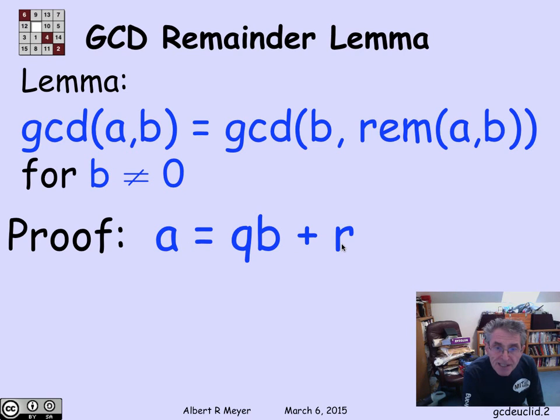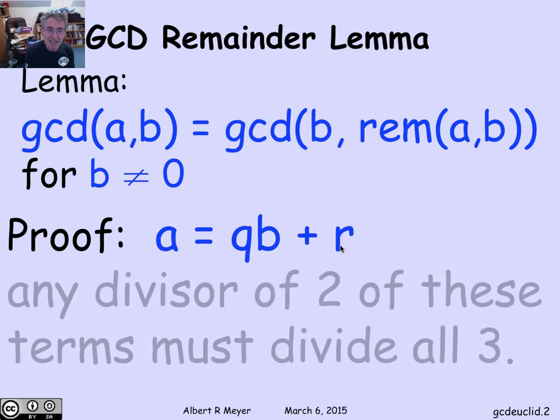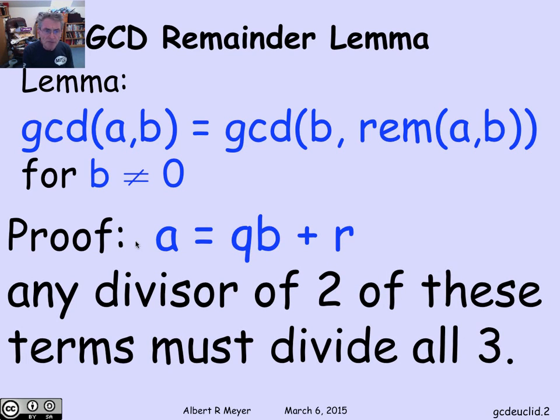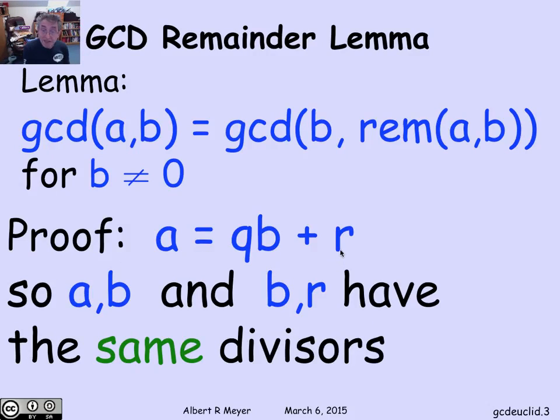If you look at this simple expression, what becomes apparent is that if you've got a divisor of two out of three of these terms, then it's going to divide the third term. If you have a divisor of b and r, then the sum of those two things is also going to have the same divisor, which means that a will have that divisor. That means that a and b and b and r have exactly the same divisors. They not only have the same greatest common divisor, all their divisors are the same. And that proves this key remainder lemma.